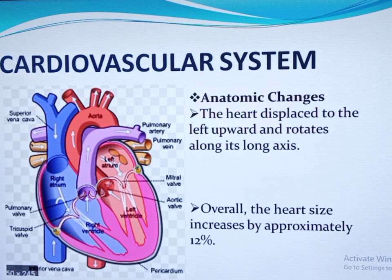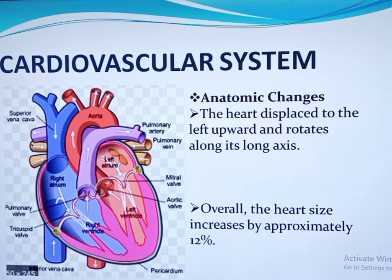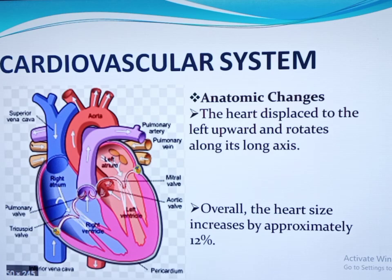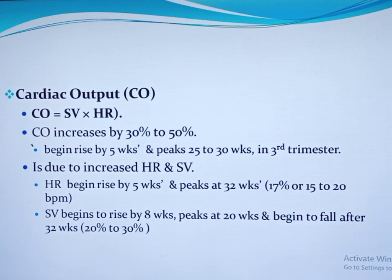Because of this anatomic change, the point of maximal impulse on physical examination is displaced to the left side and radiographic imaging is changed. Some changes on imaging are straightening of the left side of the heart, increased prominence of pulmonary contours, and increased cardiac silhouette. This is due to eccentric hypertrophy — the volume of the heart chambers is increased, but there is no significant change in wall thickness. This eccentric hypertrophy is due to increased blood volume during pregnancy and increased afterload later in pregnancy. It normally resolves within six months after delivery.